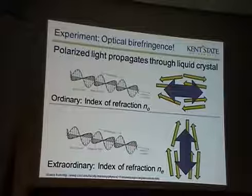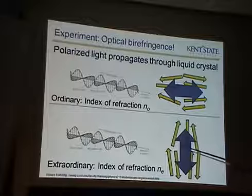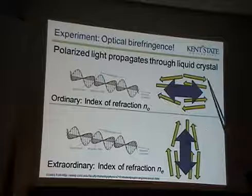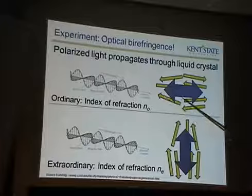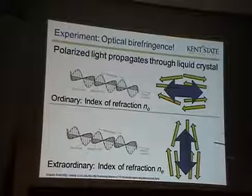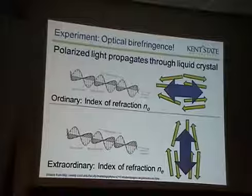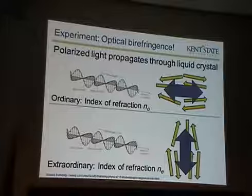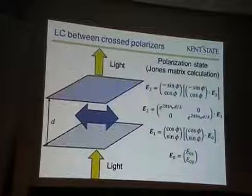So the index of refraction is different for light coming in with different orientations with respect to the director. This one is called ordinary, and this one is called extraordinary. These now have different indices of refraction — in other words, different speeds of light — depending on the polarization for light coming in with these different orientations with respect to the director. That has major consequences for what you see when you shine light through a liquid crystal.